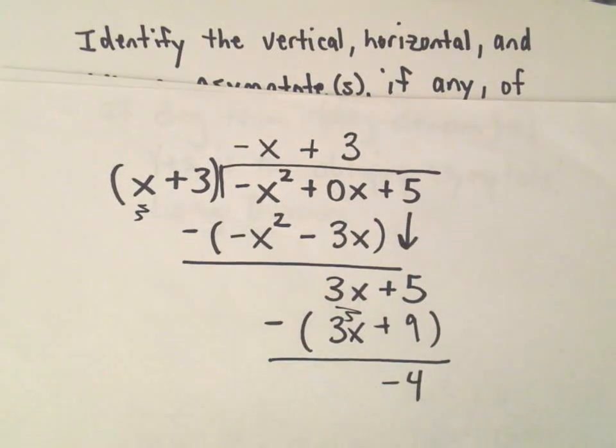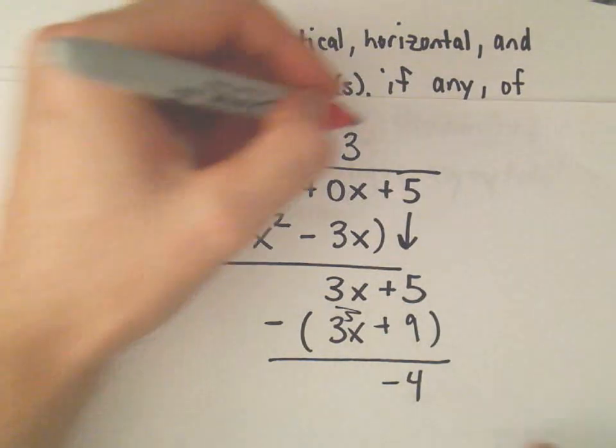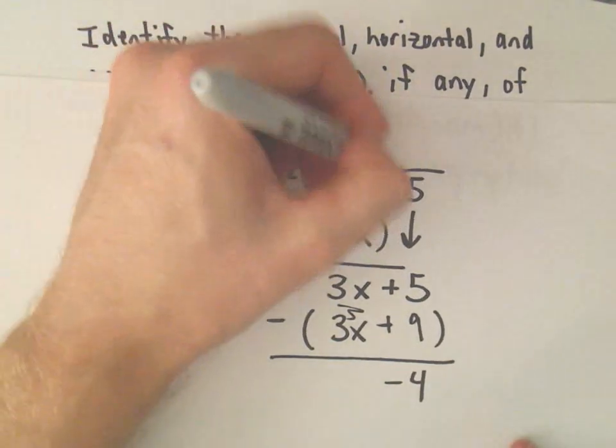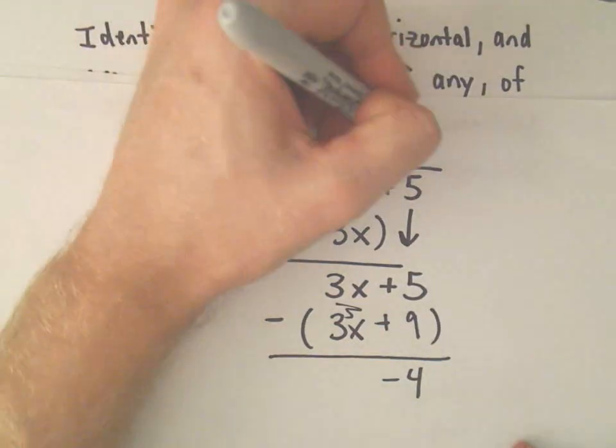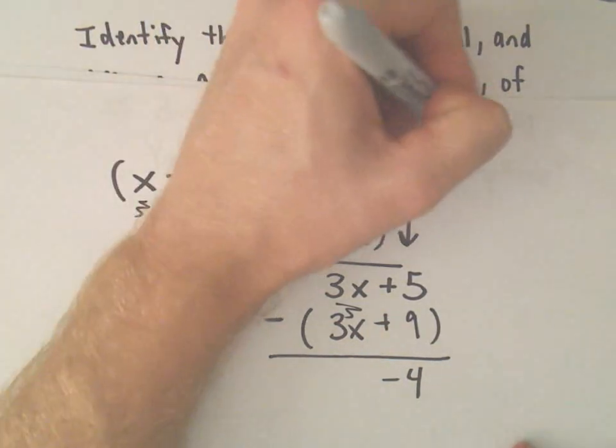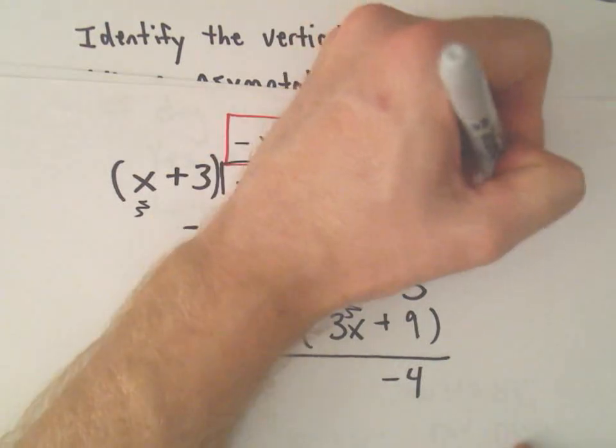So, technically, at this point, you can actually stop and pick out your vertical, or excuse me, not your vertical, you can pick out your oblique asymptote in this case. It's going to be whatever's in the numerator here. This is going to be the oblique asymptote. And we can say the oblique asymptote is going to be the line y equals negative x plus 3.